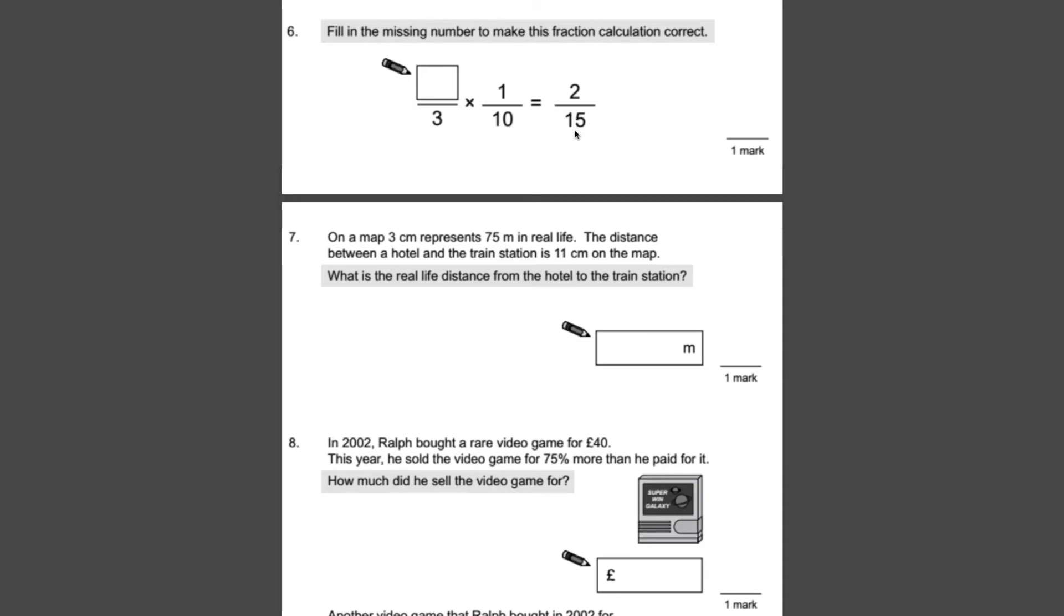What that means is we need 4 thirtieths because 4 thirtieths is the same as 2 fifteenths. So if we can find out a way of getting 4 thirtieths, then we're going to get the answer right. So obviously we don't need to change anything on the bottom. Something times 1 should be 4, so our answer should be 4 thirds. And just check that, 4 times 1 will be 4, 3 times 10 is 30. And if we cancel that down, so divide the top and the bottom by 2, we get 2 fifteenths. So that's exactly the same as that. So our answer is 4 thirds.